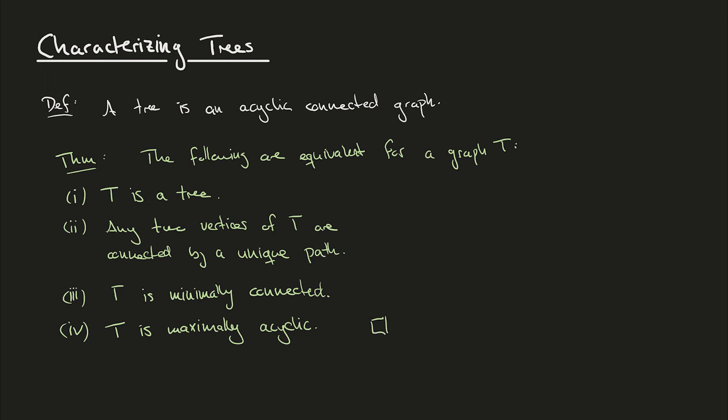This isn't the only way one could have proved this theorem — one could have chosen different implications. If any argument presented isn't clear, try coming up with a different argument for different implications. I hope what I said about trees occupying a balancing point between connectivity and acyclicity makes more sense now. If we have a tree T and remove any edge, it becomes disconnected — that's what minimally connected means. On the other hand, if we add any edge, it becomes cyclic.